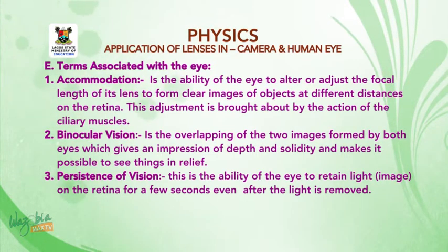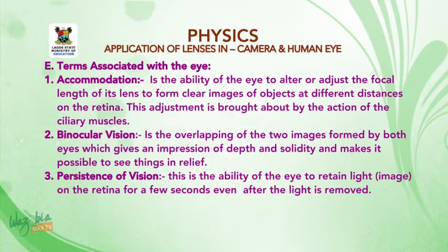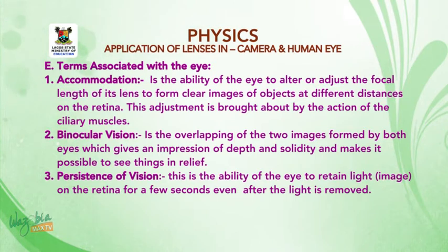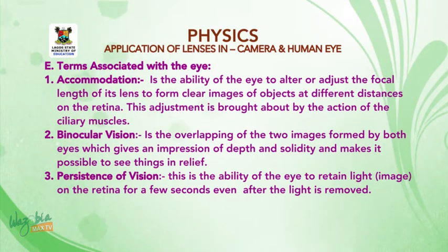Number two: binocular vision. This is the overlapping of the two images formed by both eyes, which gives an impression of depth and solidity and makes it possible to see things in relief. Number three: persistence of vision. This is the ability of the eye to retain light or an image on the retina for a few seconds, even after the light is removed.